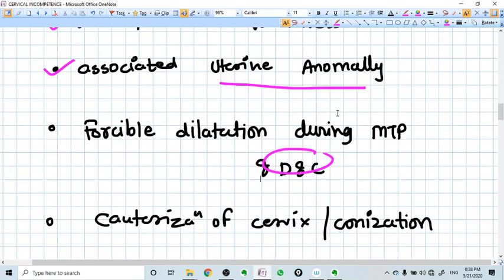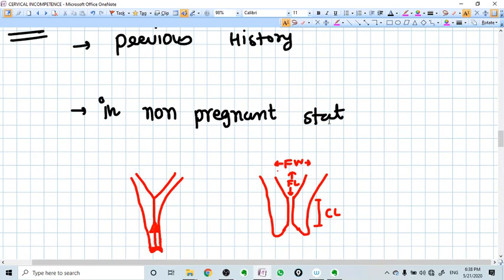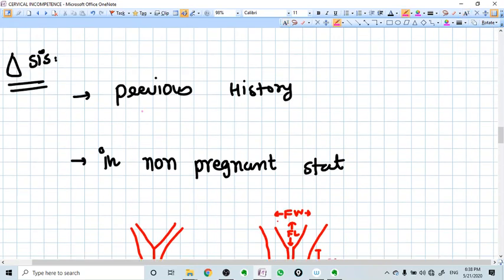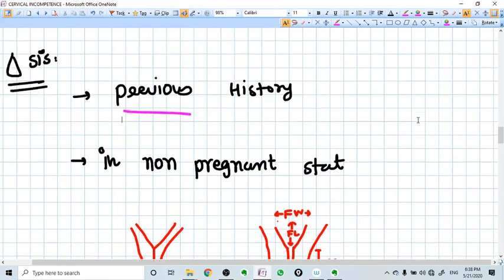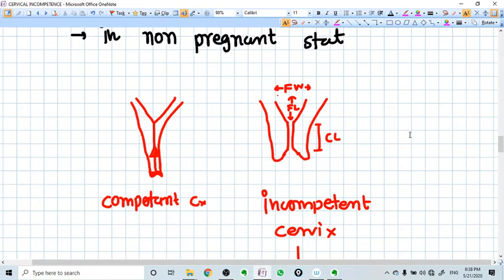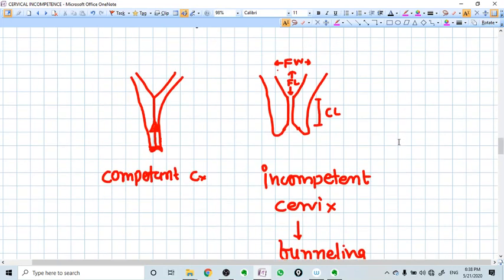Now, how do you diagnose this? If you have previous history like painless delivery in second trimester, you have doubt that it can be due to cervical incompetence. When you examine the uterus in non-pregnant state under ultrasound guidance, you see the competent cervix is Y-shaped or T-shaped.